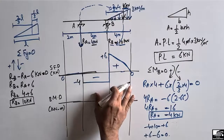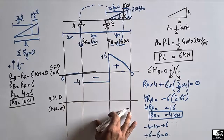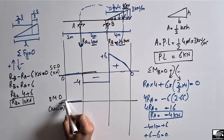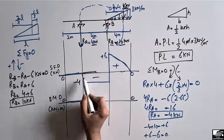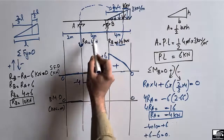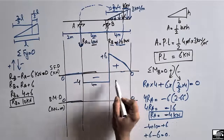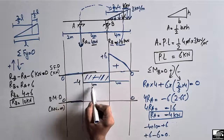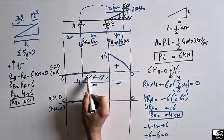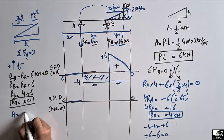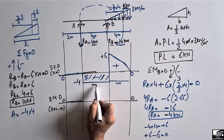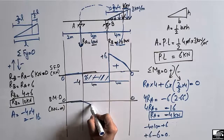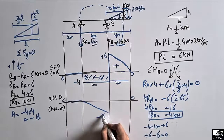With the shear force boxes identified, we calculate their areas to draw the bending moment diagram. At the free end there is zero shear force, so there is also zero bending moment. The negative shear box has a height of 4 kilo Newton and a length of 4 meters, forming a rectangle. Its area equals minus 4 times 4, giving minus 16 kilo Newton meter — that is the bending moment value at support B.